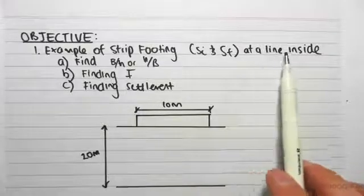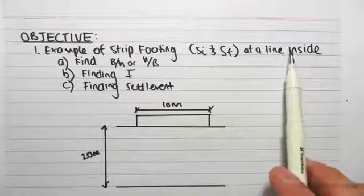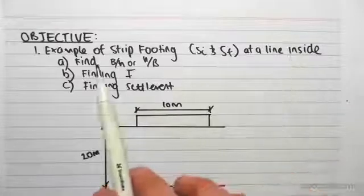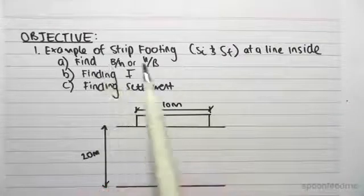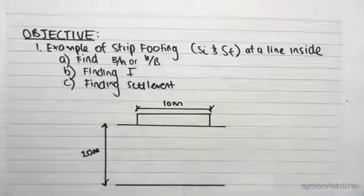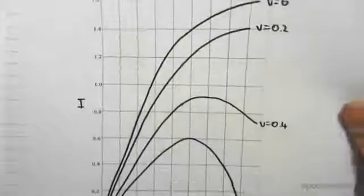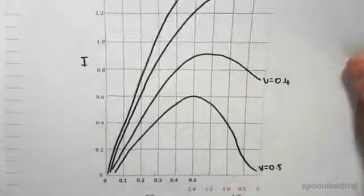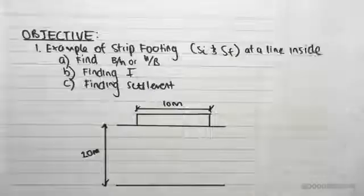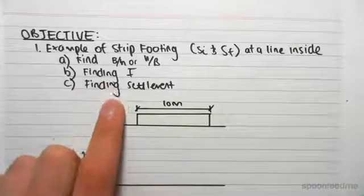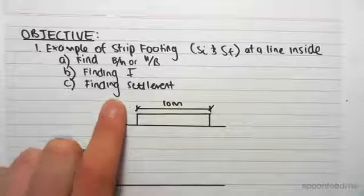For this video, we're looking at a point or a line inside the strip footing. I'll show you what that means in a second. To do this example, we have to find B/H or H/B. Then, given the Poisson's ratio, we'll find the I value using a graph like this, which is specifically for a strip footing. Based on the I value, we can find either the initial or final settlement.